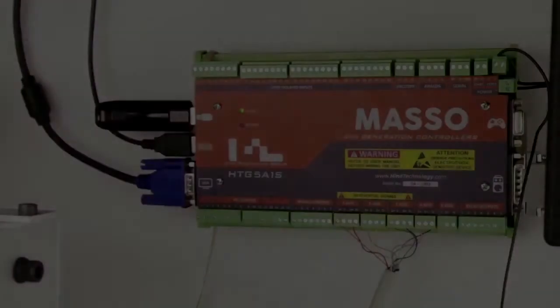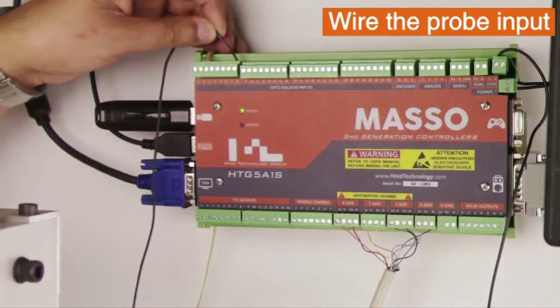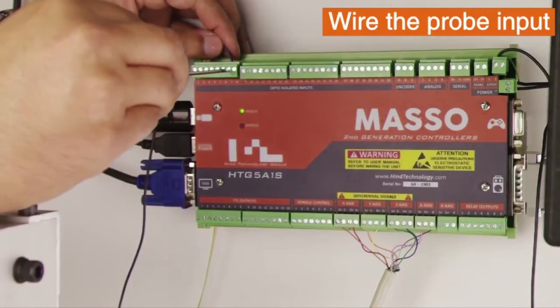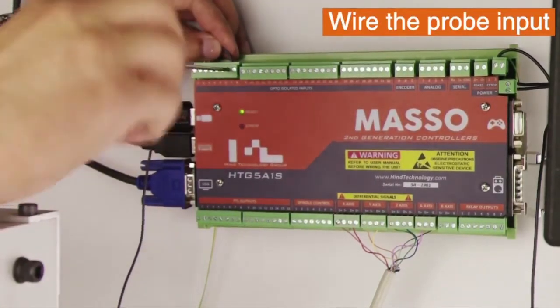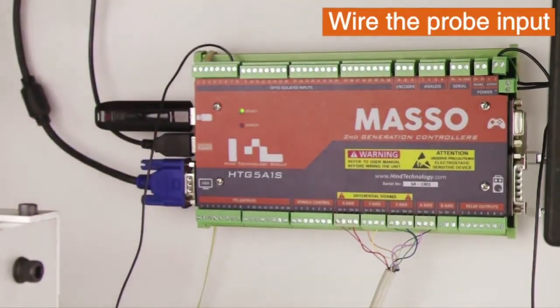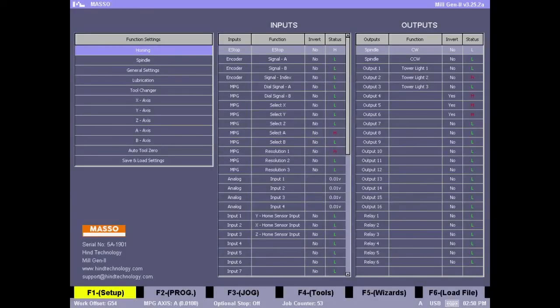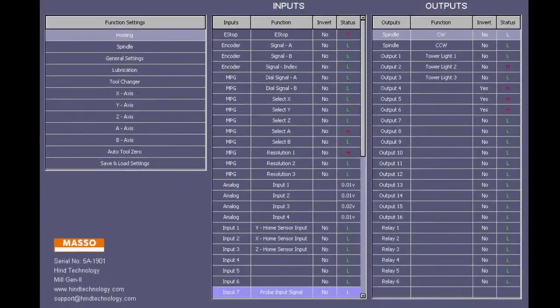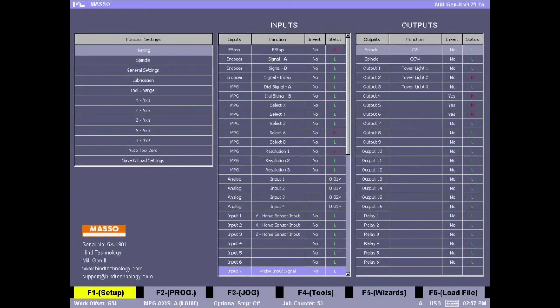Now we need to wire this input to input number seven. So that's our touch plate input going on to input number seven. So now we are in the setup screen. We will go to the Inputs and go down to input number seven. Select the probe input signal, press Enter to assign this input. So we are all ready to go from the hardware side of things.